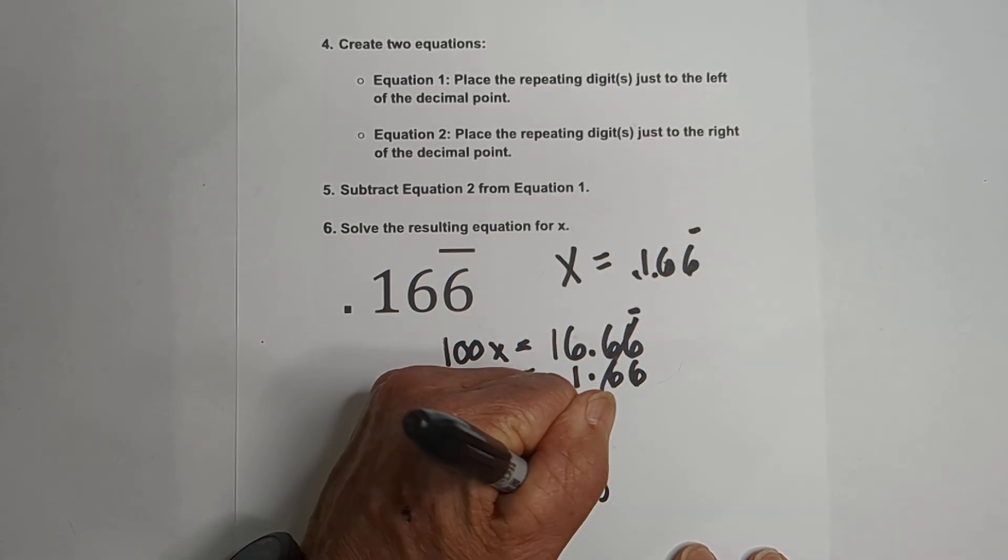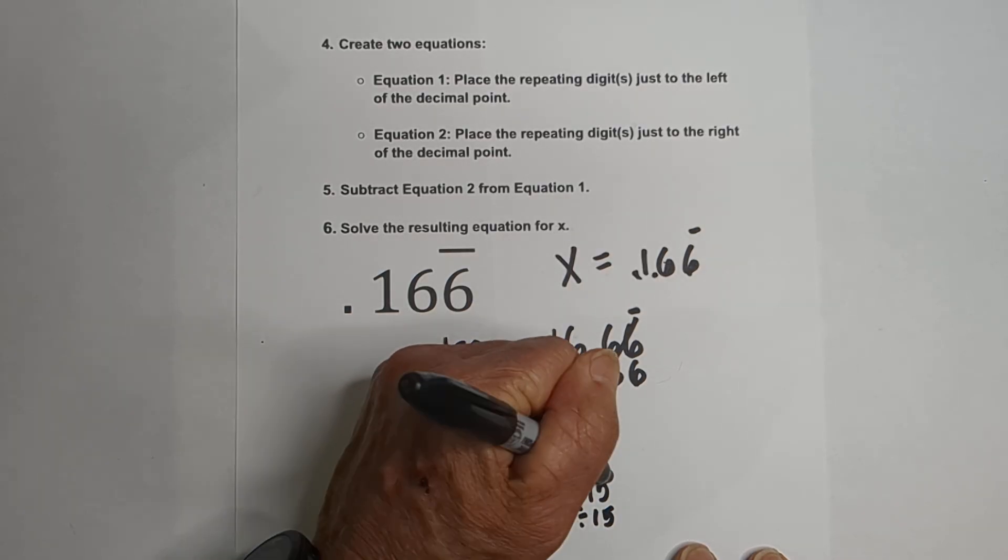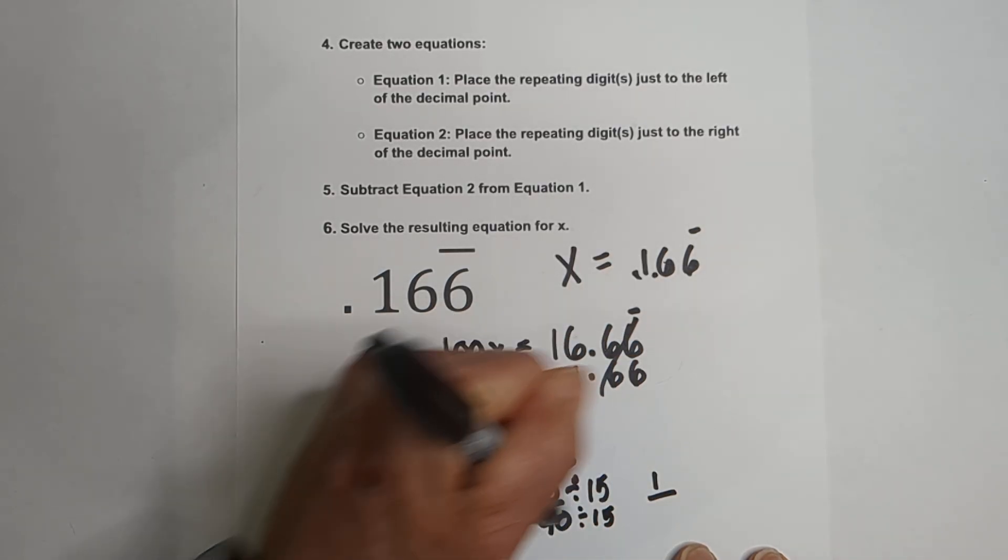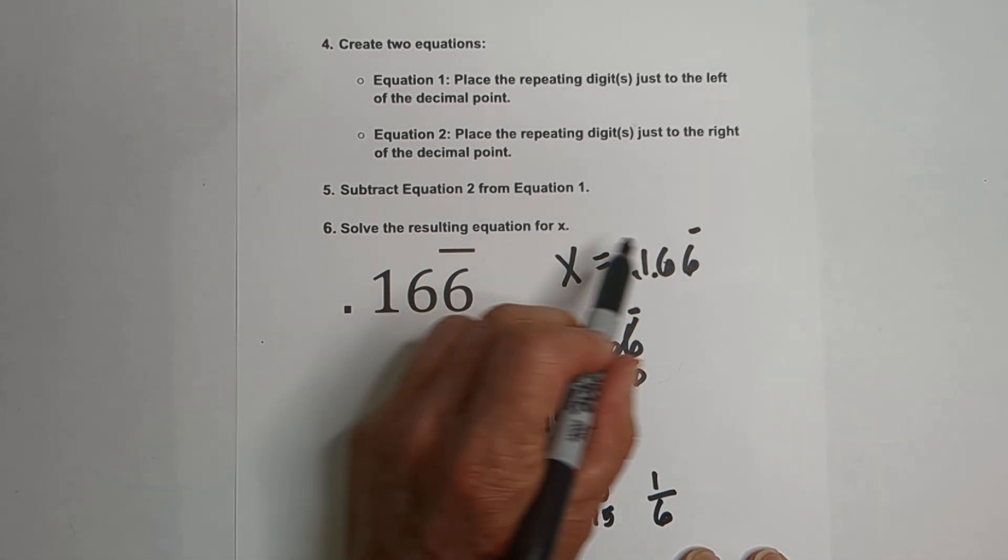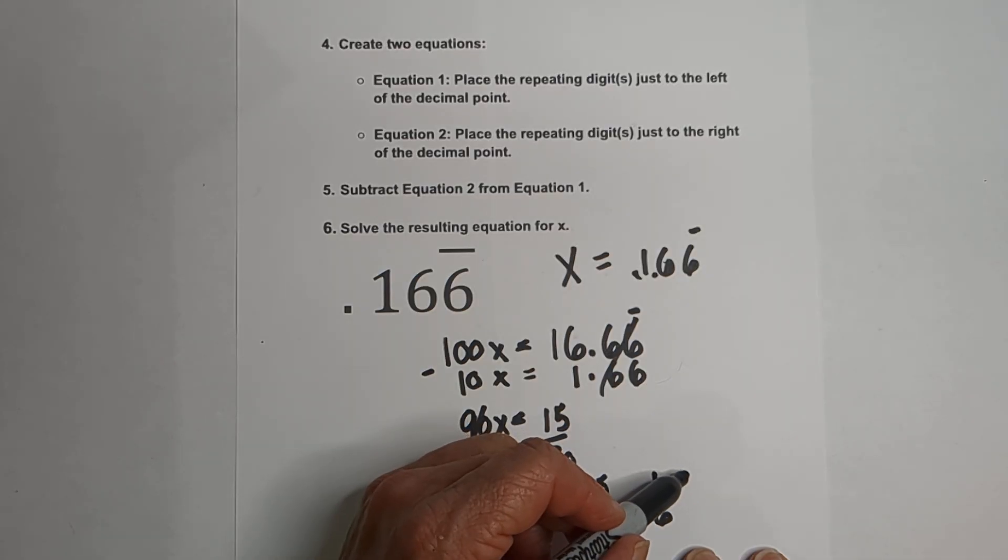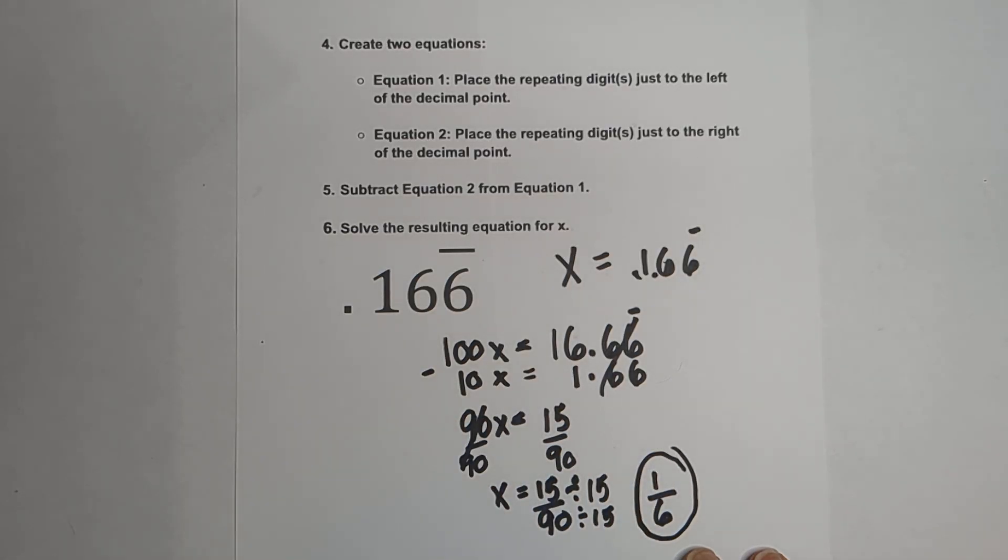Both divisible by 15. 15 divided by 15 is 1, 90 divided by 15 is 6, so 1 and 6, 6 repeating as a fraction is 1 over 6. I hope that was helpful.